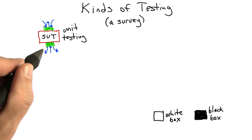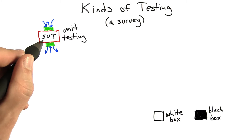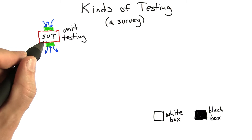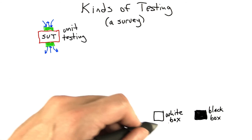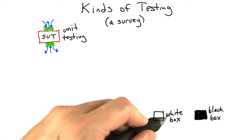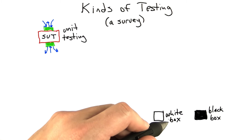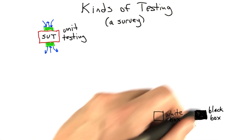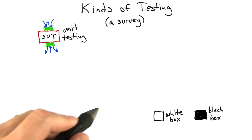Often the person performing the unit testing is the same person who implemented the module. In that case, we may well be doing white box testing, but unit testing can also be black box testing.